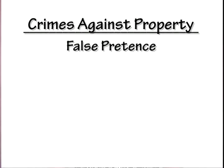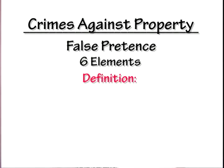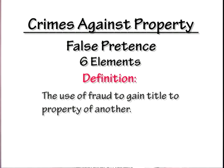Number four: false pretense. There are six elements. The definition is the use of fraud to gain title to the property of another.